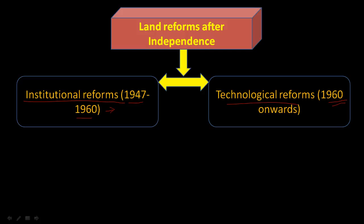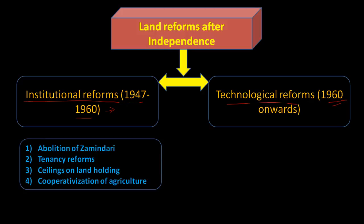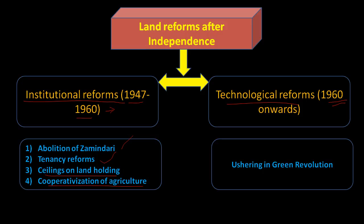In the institutional reforms, we have abolition of Zamindari, tenancy reforms, ceilings on landholding, and co-operatization of agriculture. In the subsequent slides, we will learn about each of them in detail. And on the technological side, we have the beloved green revolution.